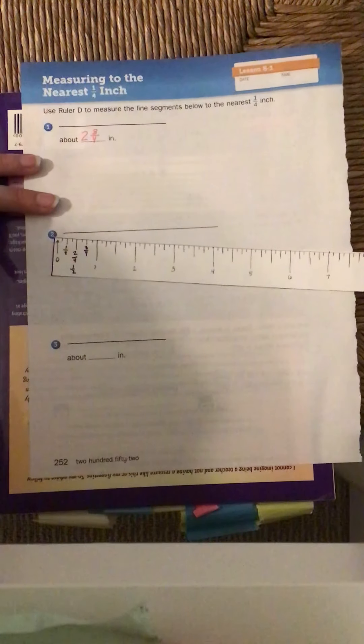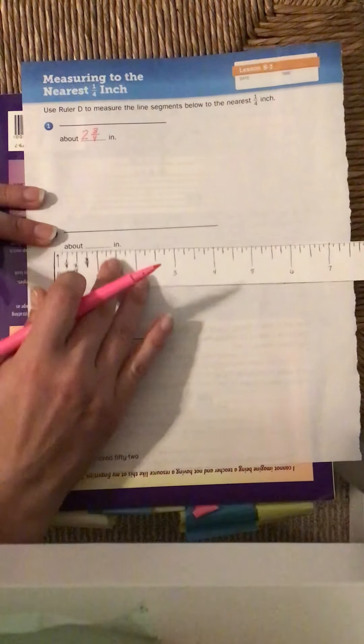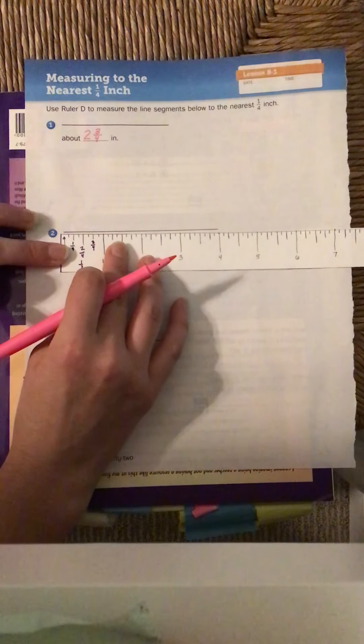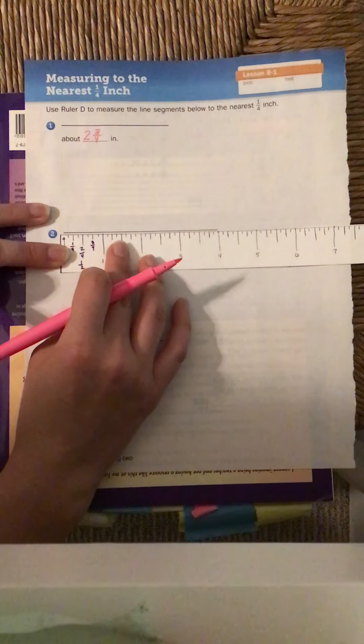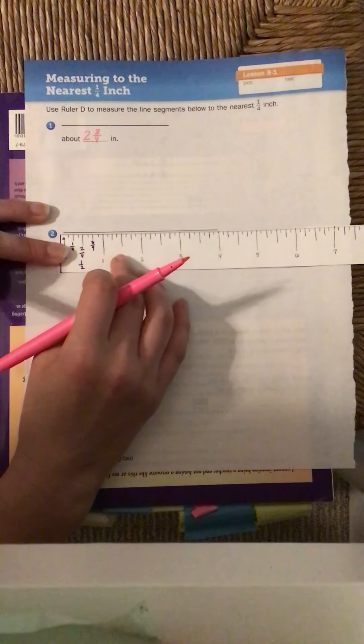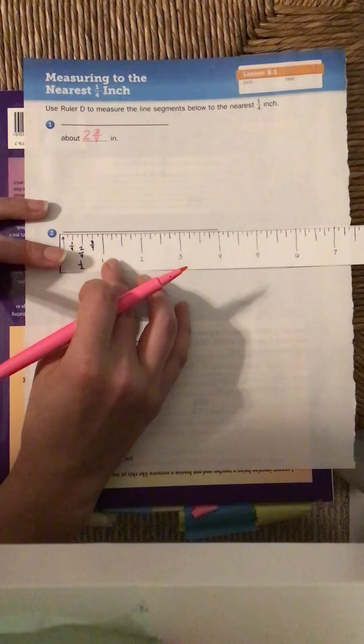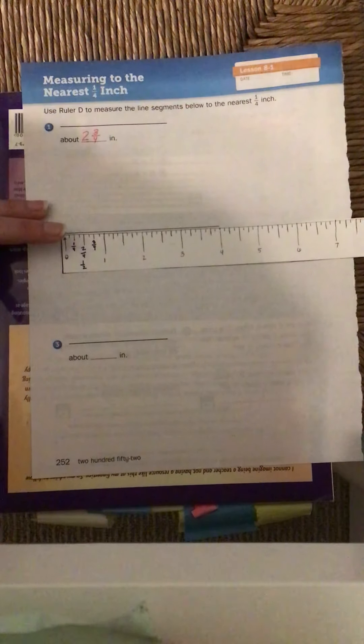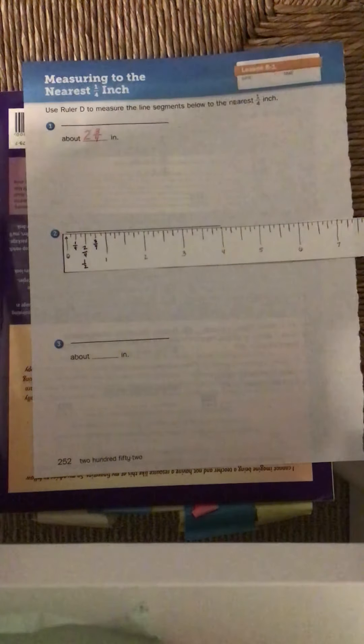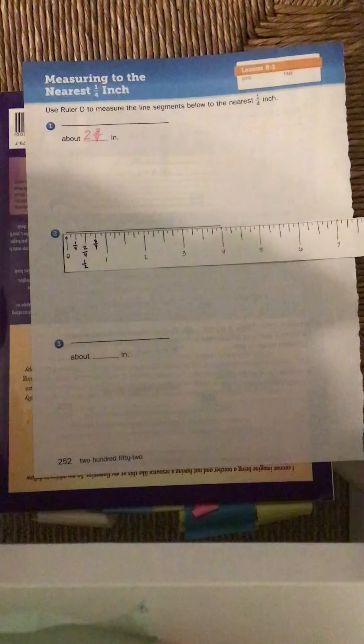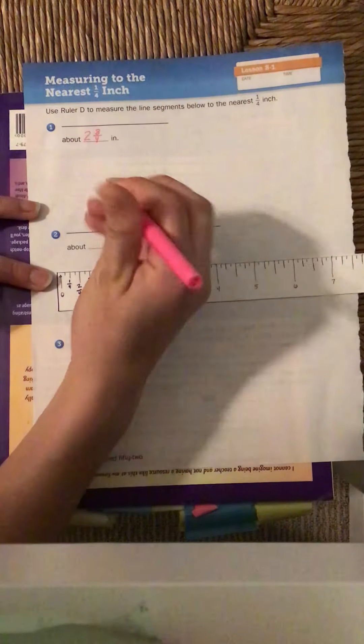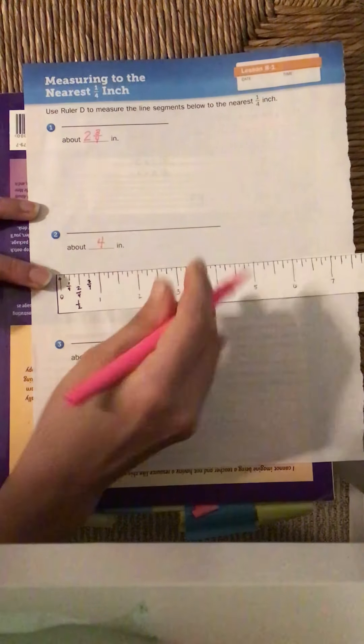All right, let's try this for number 2. Number 2, we have another line segment. So I'm going to line it up at 0. Go ahead and do the same thing. And I'm measuring it again to the nearest quarter inch. What should I write down? Well, it hits right at my whole number 4. So I'm going to write down 4 inches.